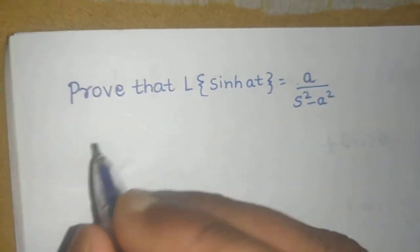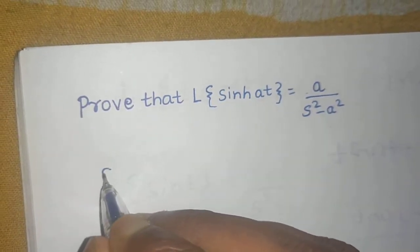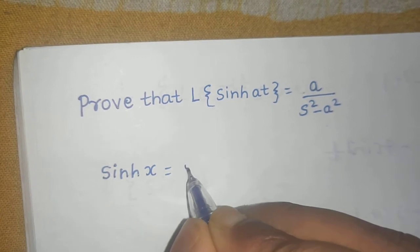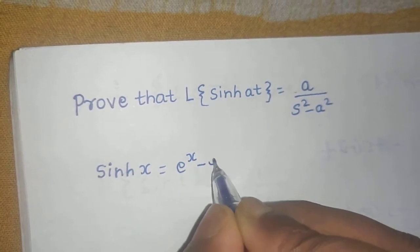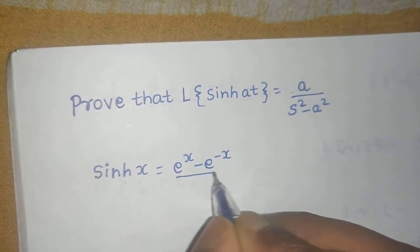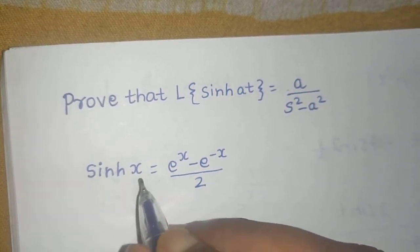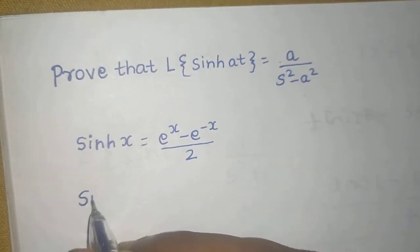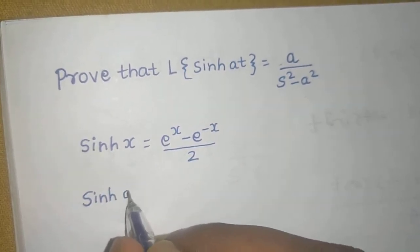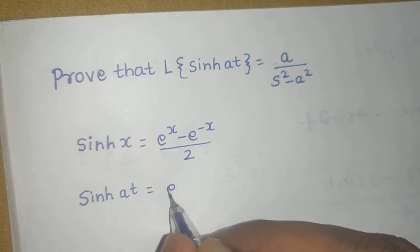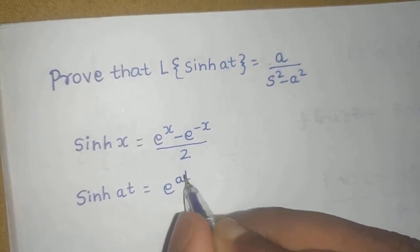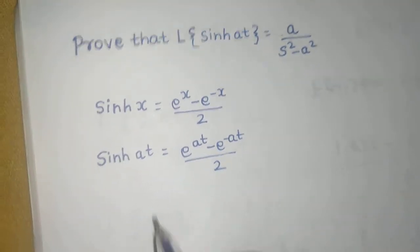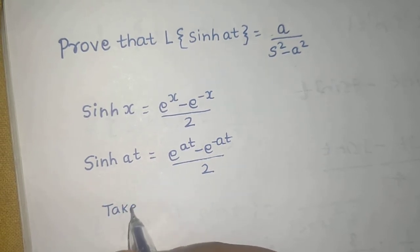First, let's understand how we can write the expression for sinh(x). It is nothing but e raised to power x minus e raised to power minus x, all divided by 2. So if we write the expression for sinh(AT), that will be e raised to power AT minus e raised to power minus AT, divided by 2.